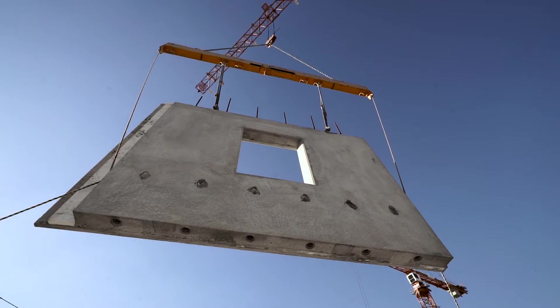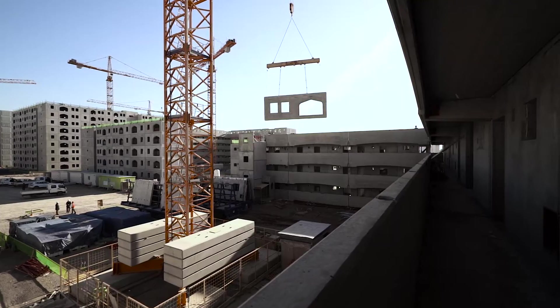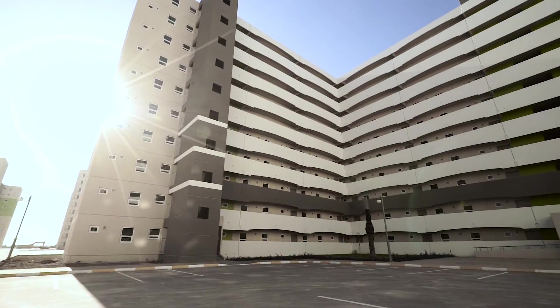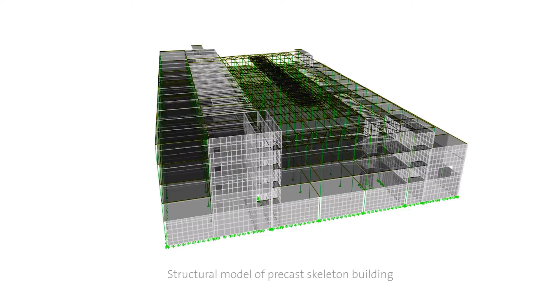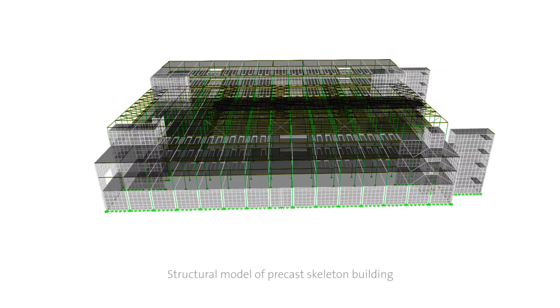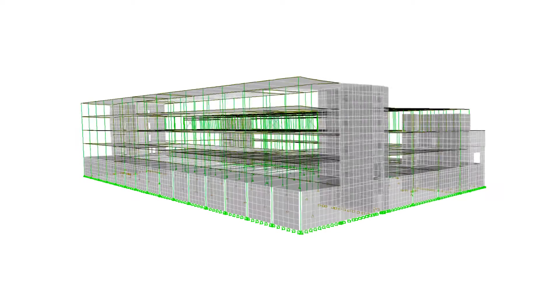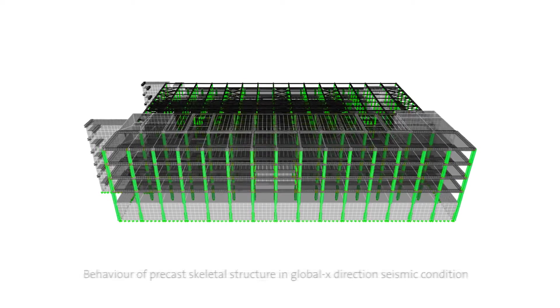We have implemented precast very successfully using modern precast concrete technology in high seismic zones. Elematic has provided the technology to produce precast elements as well as engineering services. One of the cases is a major R&D center — a 15,000 square meter building, five storeys in height, located in seismic zone 4.